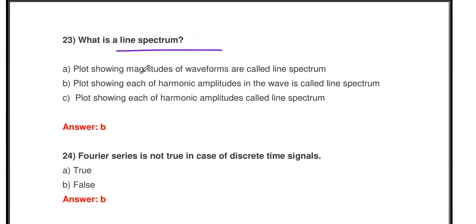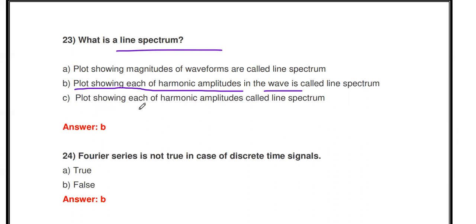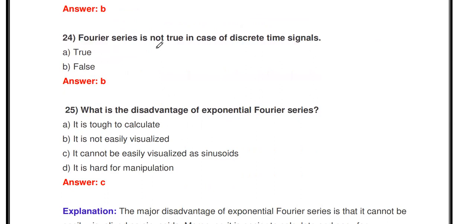Next question: What is a line spectrum? To draw the line spectrum, the time domain signal is converted to the frequency domain. The line spectrum consists of two things: the magnitude spectrum and the phase spectrum. A line spectrum is a plot showing each of the harmonic amplitudes in a waveform. Each frequency component and its amplitude are represented — this plot is called the line spectrum.